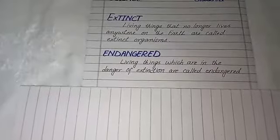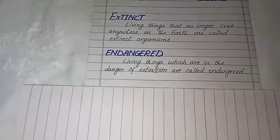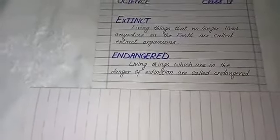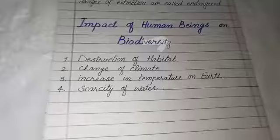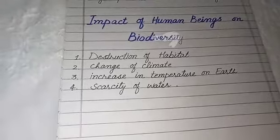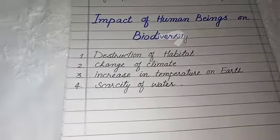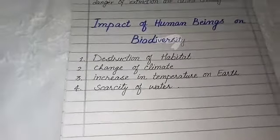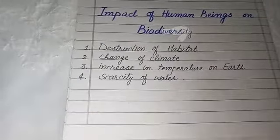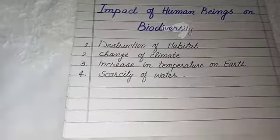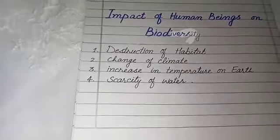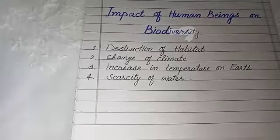What are the reasons why organisms are going to end up or become extinct? The first point is destruction of habitat. If animals live in the jungle, humans cut the trees and clear the land — this is called destruction of habitat. The second point is change of climate. What is climate change?